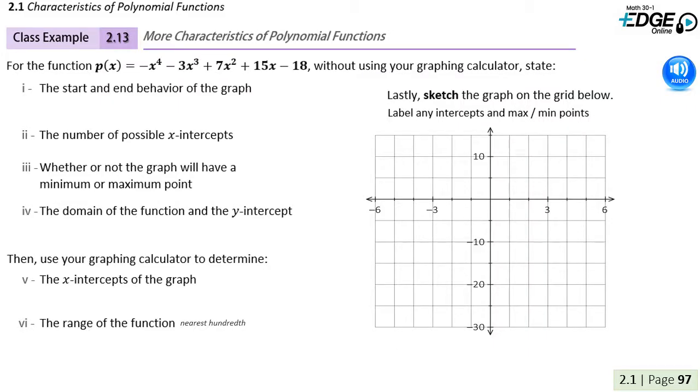Let's have a look at class example 2.13. We're given a function p of x equal to negative x to the fourth minus 3x cubed plus 7x squared plus 15x minus 18. We're asked to determine some features without a graphing calculator.